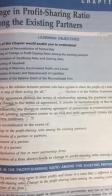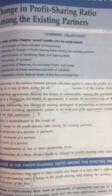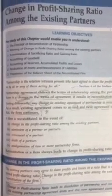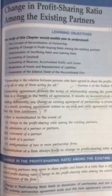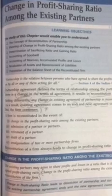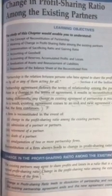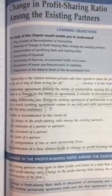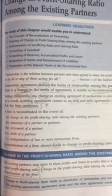Let us first start with recalling the definition given under Section 4 of the Indian Partnership Act 1932. It states that partnership is the relation between persons who have agreed to share profits of the business, which is carried on by all the partners or any one of them acting for all. So it is a relationship between partners, and that means a partner is both an agent and a principal.